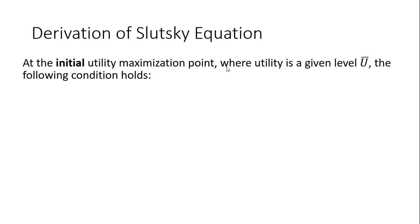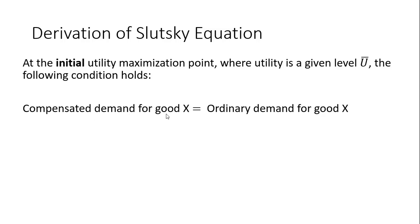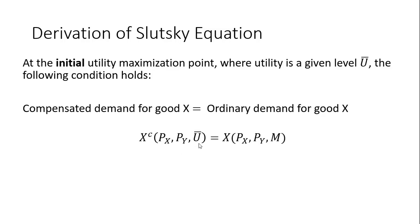At the initial utility maximization point, where utility is at a given level U-bar, the following condition holds: the compensated demand for good x will equal the ordinary demand for good x. X superscript c represents the compensated demand for good x — it is a function of the price of good x, the price of good y, and a given level of utility U-bar. At this initial utility maximization point, the compensated demand for good x equals the ordinary demand for good x, which is a function of prices and income.